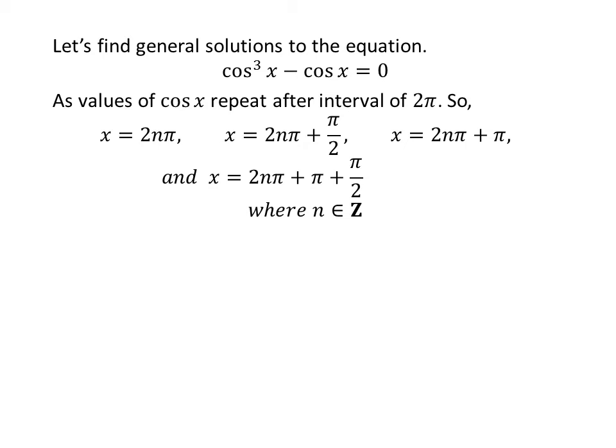Let us find the general solutions. As the values of cos x repeat after an interval of 2π, the general solutions are 2nπ, 2nπ + π/2, 2nπ + π, and 2nπ + π + π/2, where n is an integer.